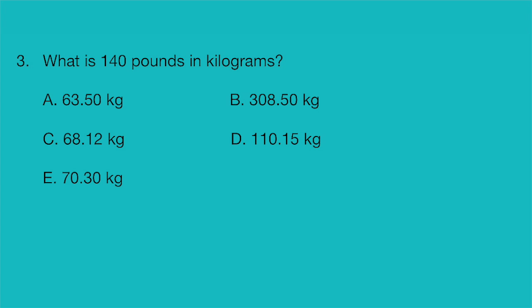Question three, what is 140 pounds in kilograms? A, 63.50 kilograms. B, 308.50 kilograms. C, 68.12 kilograms. D, 110.15 kilograms. Or E, 70.30 kilograms.